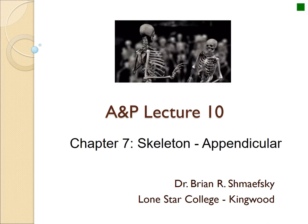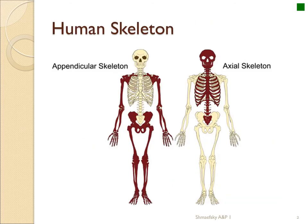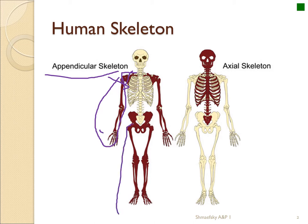Welcome to Lecture 10, which is still Chapter 7 on the skeleton. We're going to finish up the skeletal system by looking at what you need to know about the appendicular skeleton. The appendicular skeleton is composed of the shoulder girdle and the scapula, which is only attached by one tiny joint between the clavicle and the manubrium of the sternum. We then have your upper appendages and your lower appendage. The pelvic girdle, excluding the sacrum, is part of this whole attachment point.